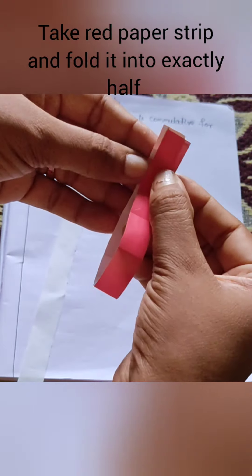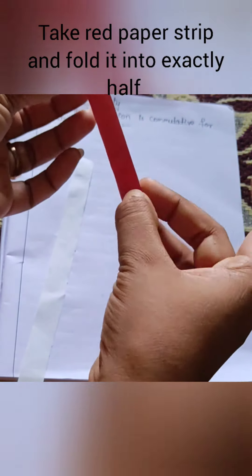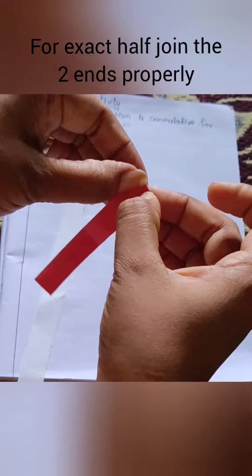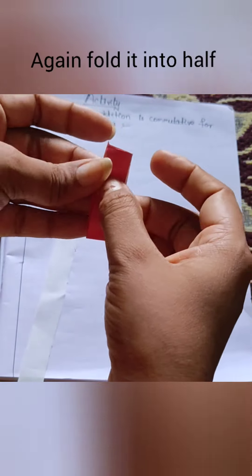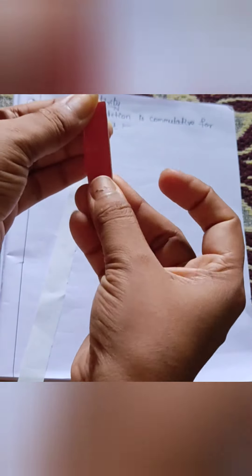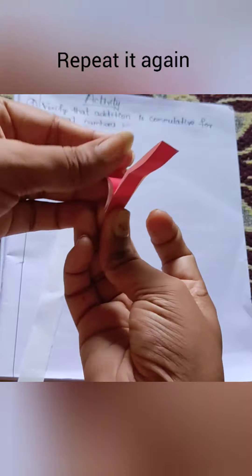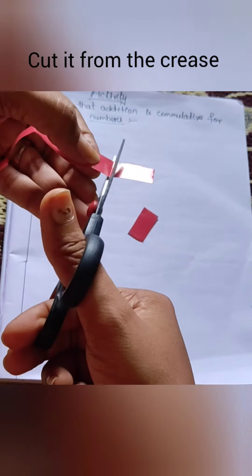Now take the red paper strip and fold it into exactly half. For this, join the two ends properly. Now again fold it into half, and repeat it again. Now unfold it. You can see there are eight pieces. Now cut it from the crease.